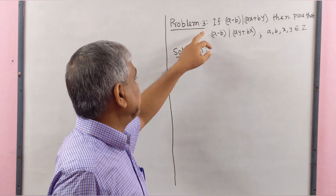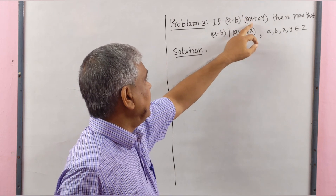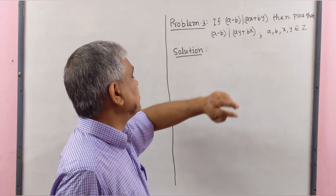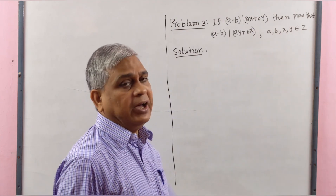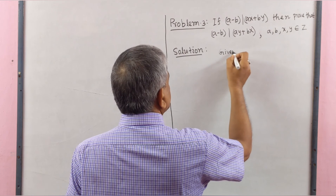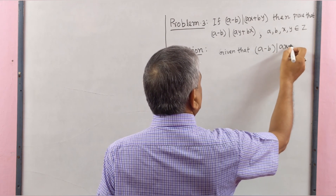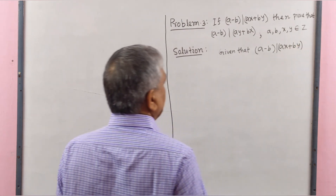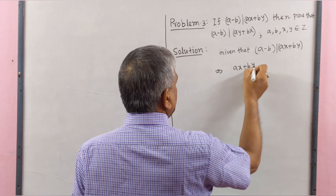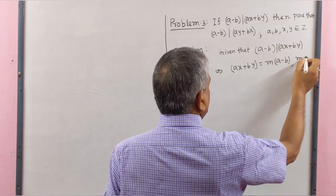Now we solve problem number 3. If A minus B divides AX plus BY, then prove that A minus B divides AY plus BX, where A, B, X, Y are all integers. Given that A minus B divides AX plus BY, by the concept of divisibility this means AX plus BY equals M multiplied by A minus B, where M is an integer. This is equation number 1.